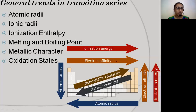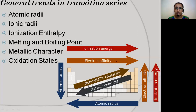Hello everyone, welcome. This is our third video on the D and F block series. In the last video, we studied about what D block elements are, why they are known as transition elements, their position in the periodic table, electronic configuration, and how they occur in nature. We also studied the characteristics of transition elements. Now we will start with general trends in the transition series, beginning with ionization enthalpy.